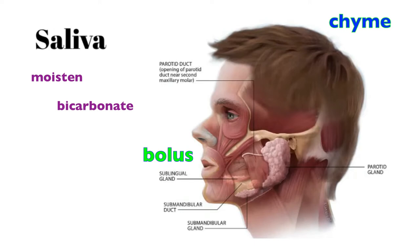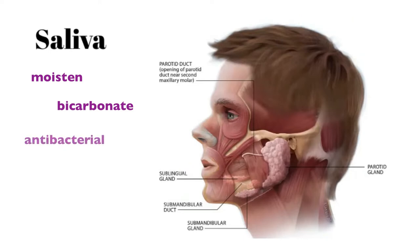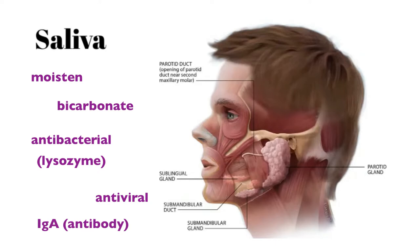Saliva has antibacterial properties via an enzyme known as lysozyme, antiviral properties, and contains antibodies — IgA — found within our saliva. It also stimulates the growth of good bacteria, which initiate within the saliva of the oral cavity.